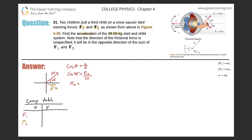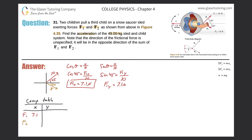F1x equals 7.1 newtons — plug that into the table. For F1y, we use sine since it's the opposite side over hypotenuse. Sine of 45 equals F1y over 10. That gives the same value since it's a 45-degree angle: F1y equals 7.1 newtons. Plug that in as well.